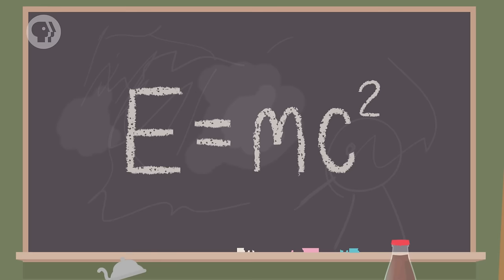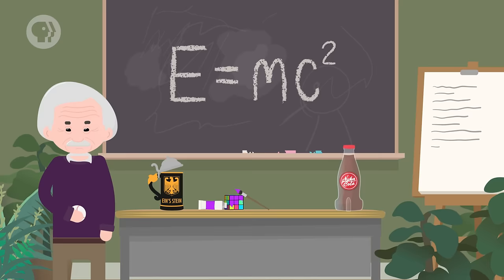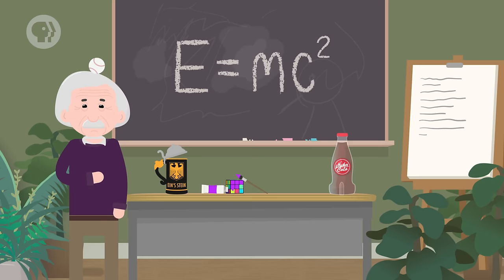E equals mc squared. You hear it all the time, but what does it mean? During his study of special relativity, Albert Einstein found that mass and energy are equivalent, and that they could be converted back and forth between one another.